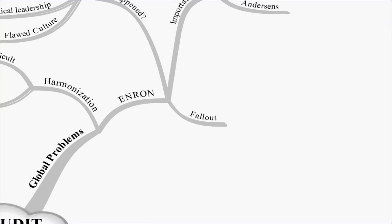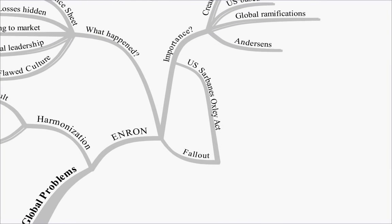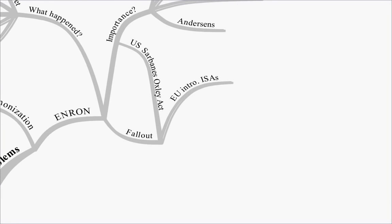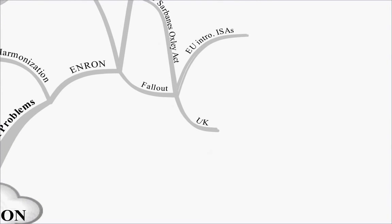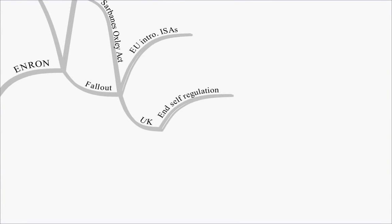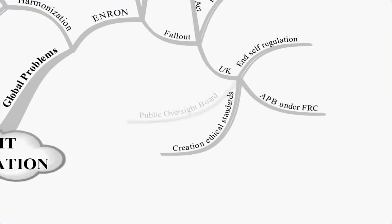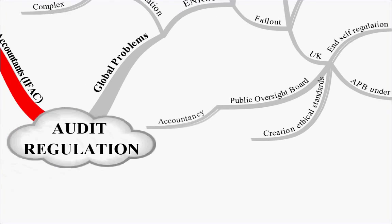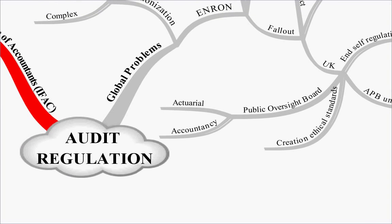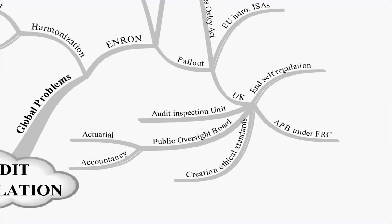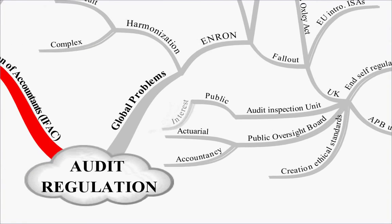There was a lot of fallout from the Enron collapse. First of all, the US introduced the Sarbanes-Oxley Act. The EU introduced international standards on auditing. In the UK, several things happened: it ended self-regulation of accountancy firms; the APB was now held under the Financial Regulatory Council rather than being separate; ethical standards were created; the Public Oversights Board was set up to cover accountancy and actuarial provisions; and the Audit Inspection Unit oversaw audits of anything in the public interest.